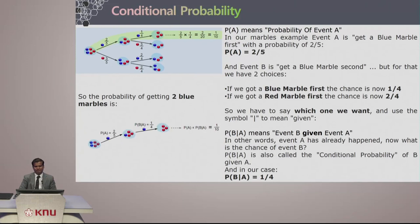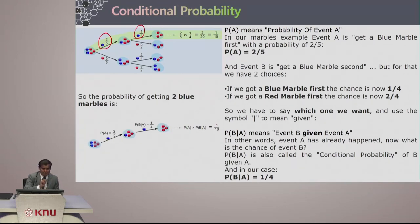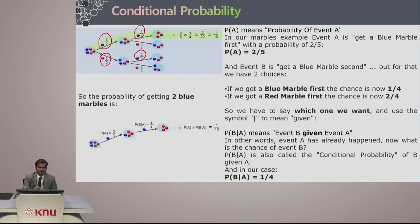P of A is 2 by 5, and event B is getting a blue marble second. For that we have two choices: if we got a blue marble first, the chance is 1 by 4; and if we got a red marble first, the chance is 2 by 4. If you got a blue marble the first time, your chances become 1 by 4 the second time.